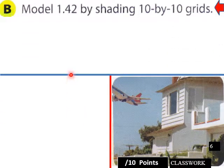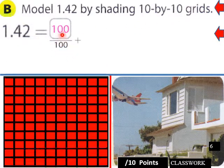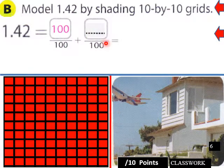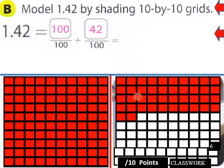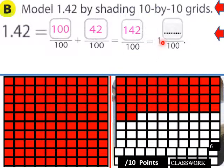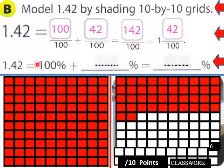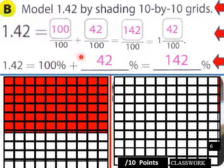And then 1.42 by shading 10 by 10 grids. 1.42 equals 100 plus 42 over 100 equals 142 over 100 equals 1 and 42 over 100. So 1.42 would equal 100 plus 42 equals 142 percent, or 1.42.